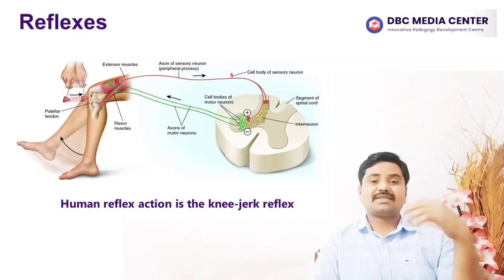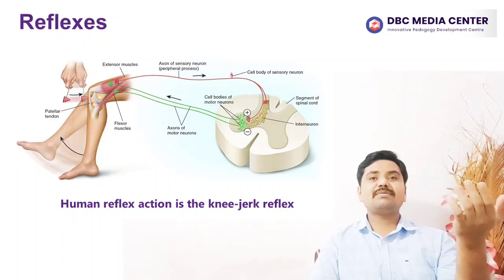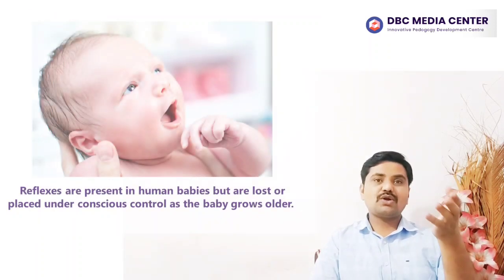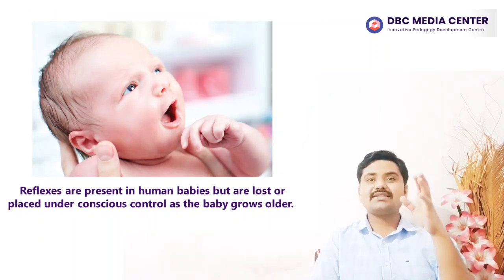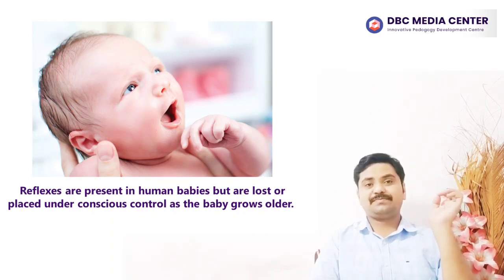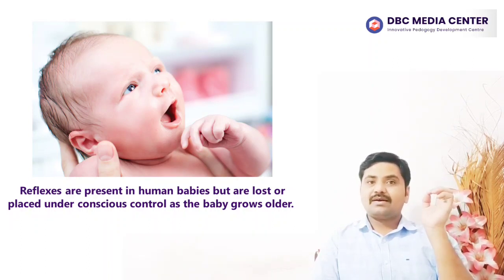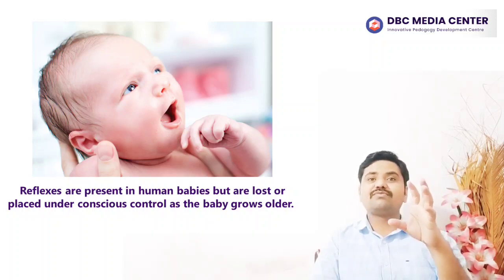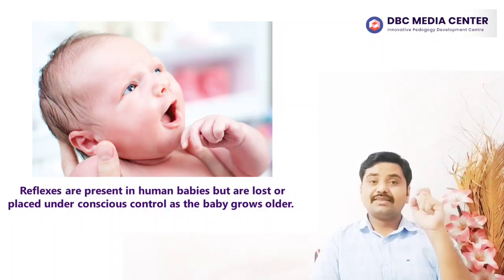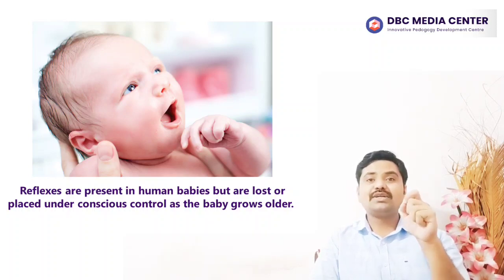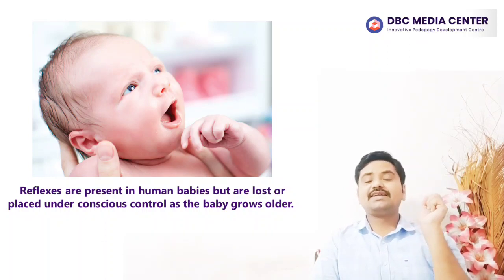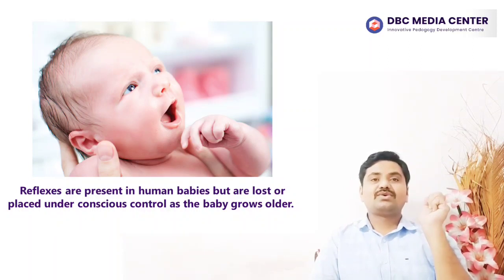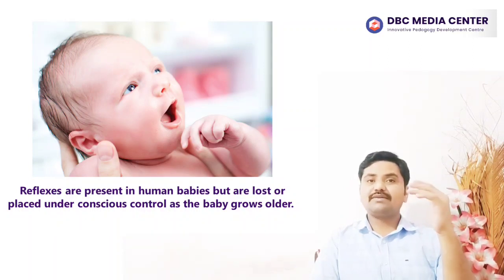Some other examples of reflexes are present in human babies but are lost or placed under conscious control as the baby grows older. A newborn baby will suck at anything that touches the roof of its mouth. This reflex helps the baby get food by ensuring it will suck at the mother's breast or a bottle placed in its mouth.